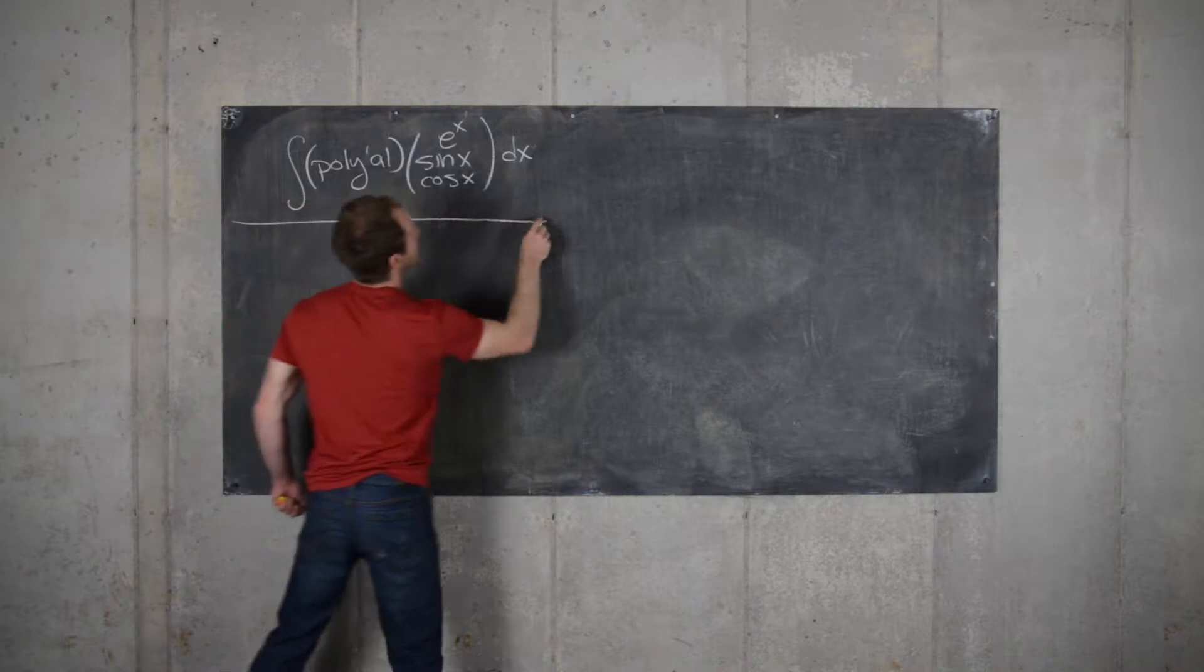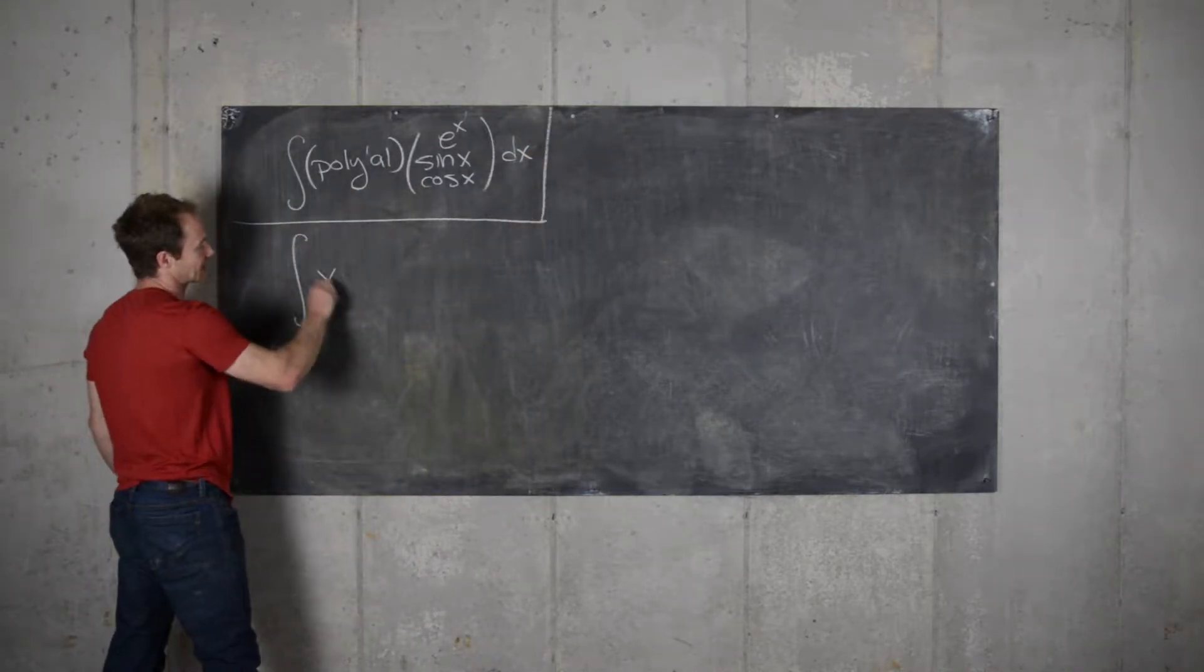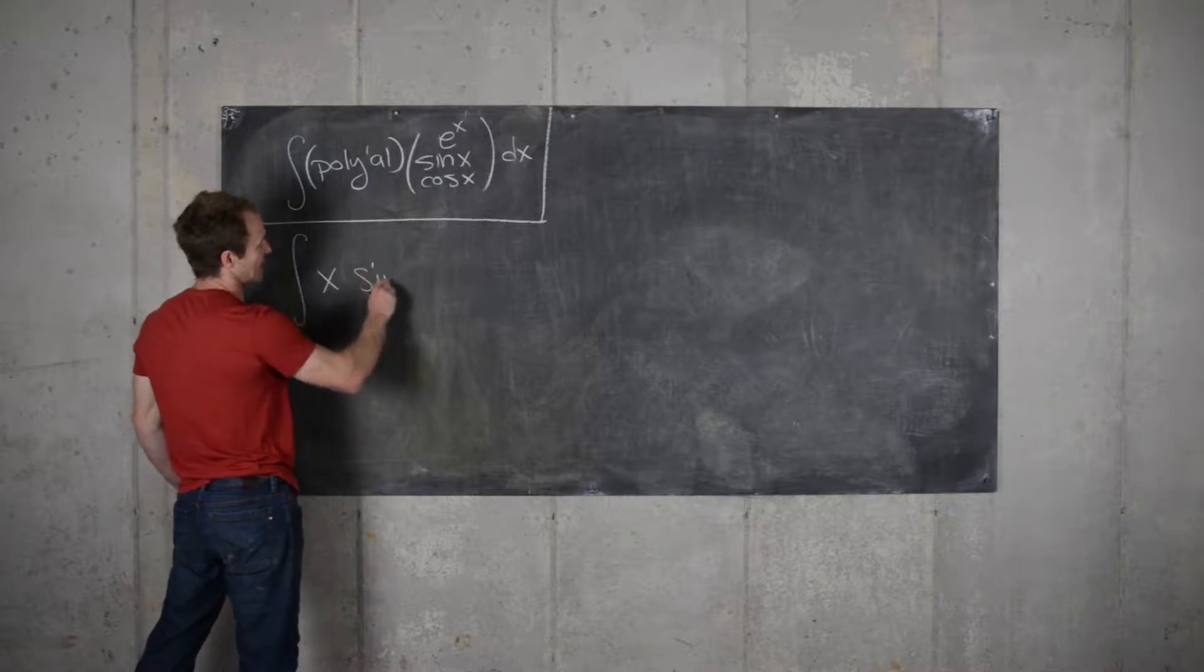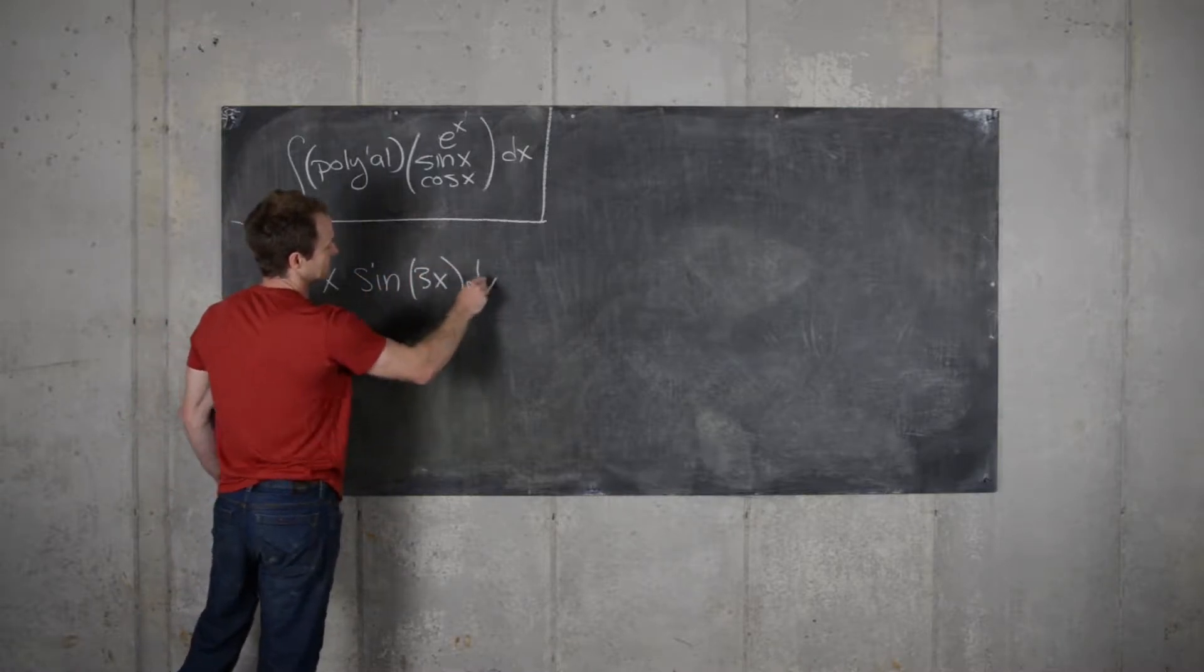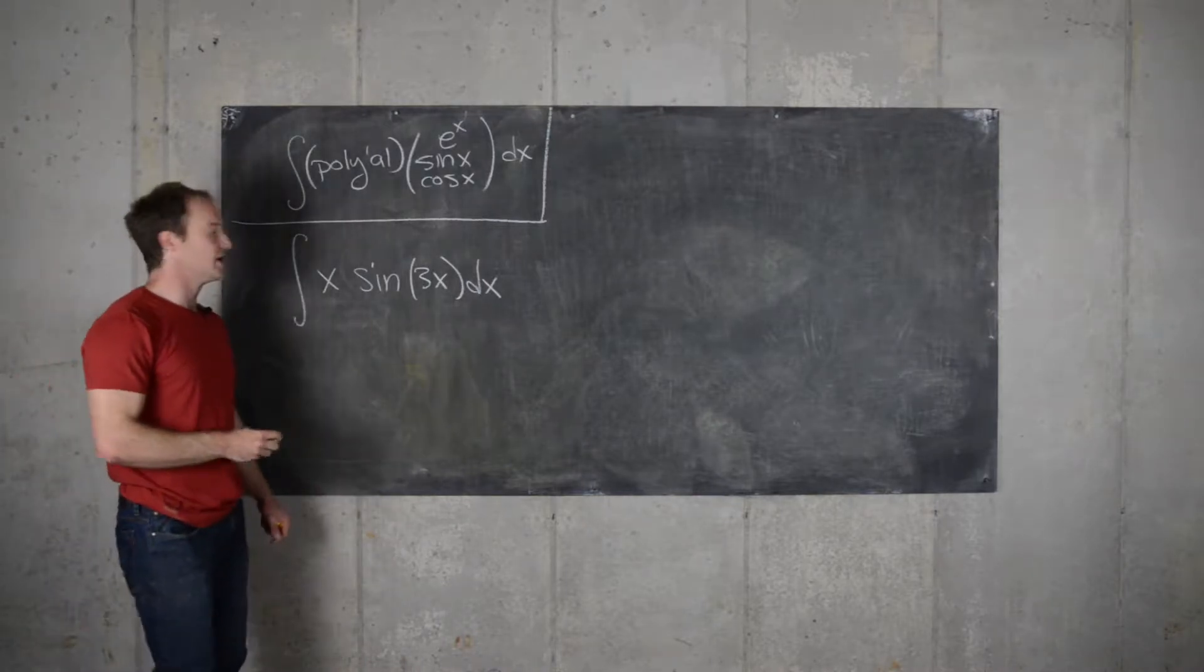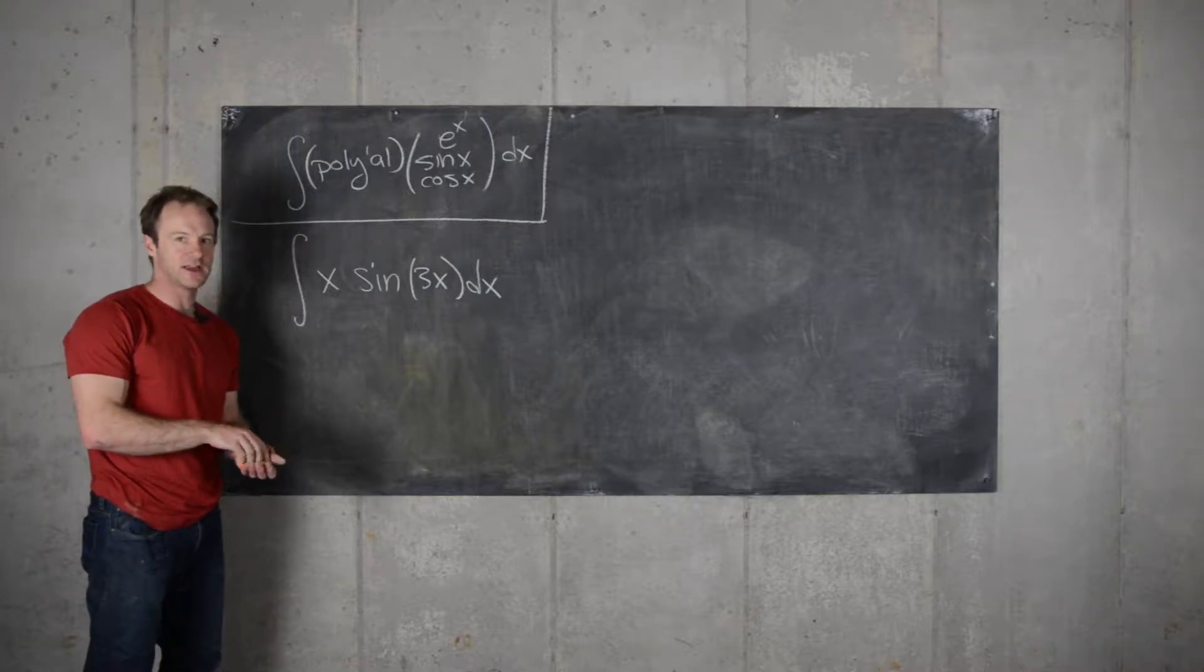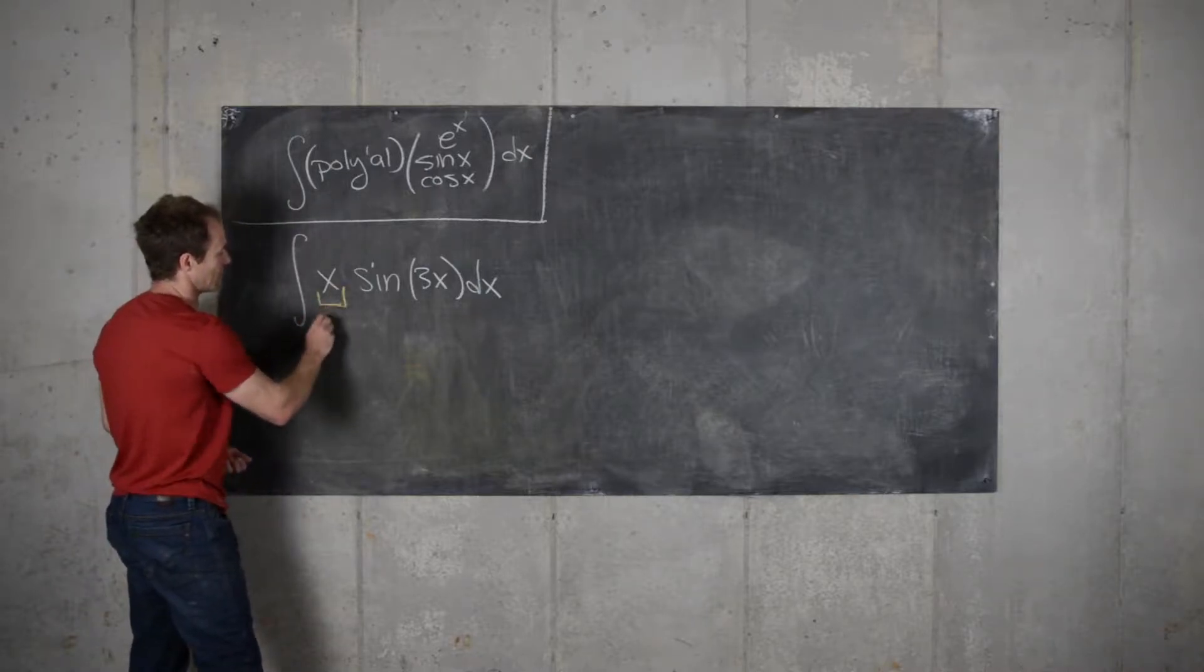So let's look at a particular example of this, maybe x times sine of 3x dx, and we want to use the general rule that you always want to choose u so that its derivative is simpler.